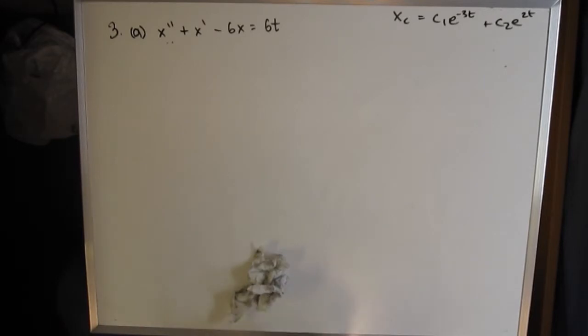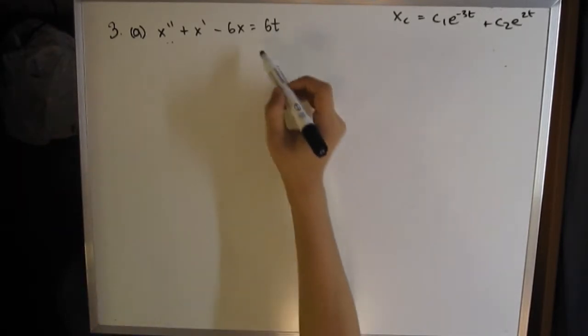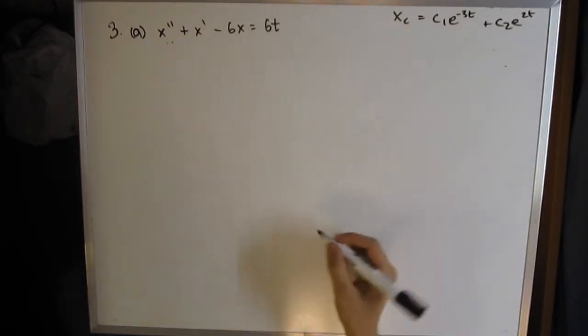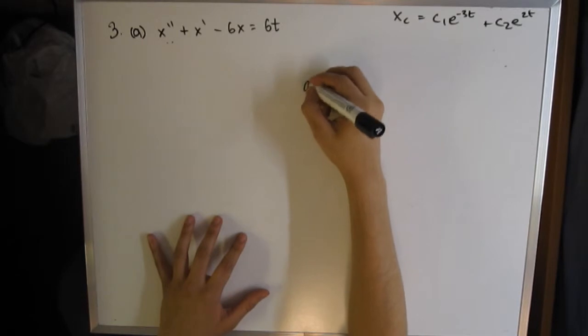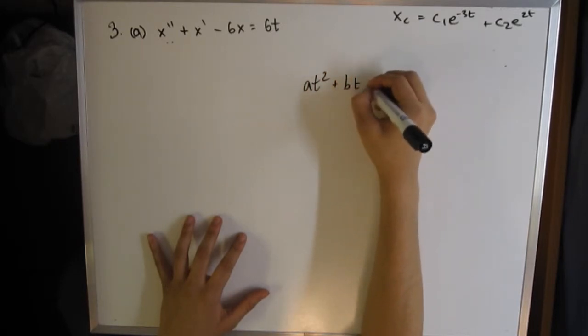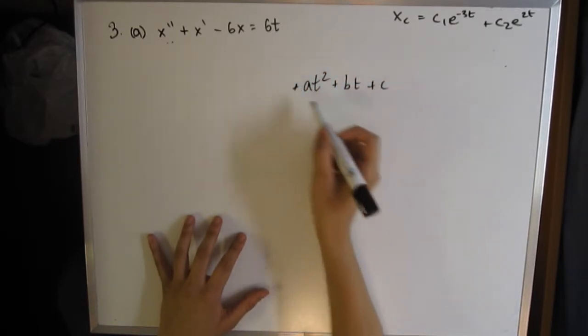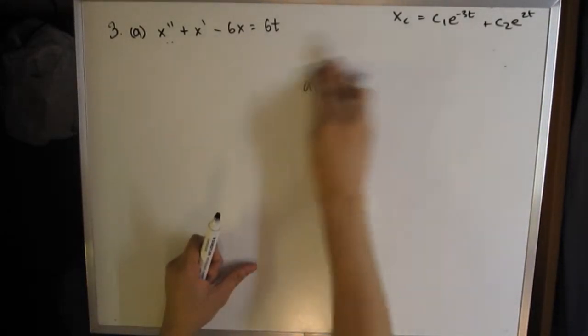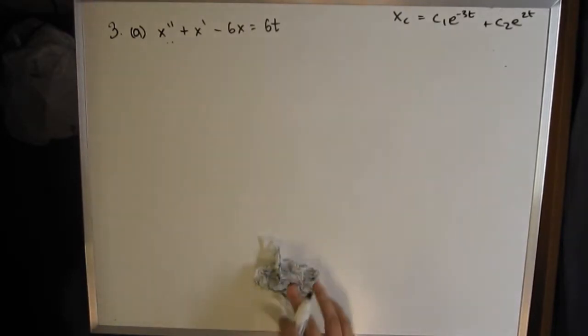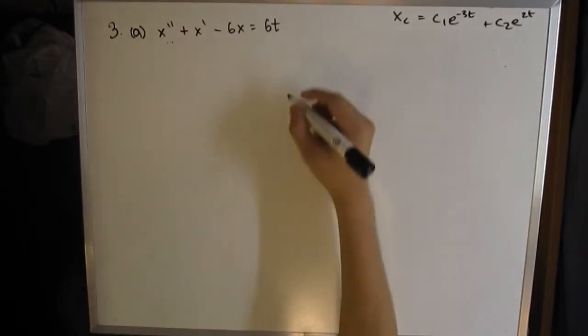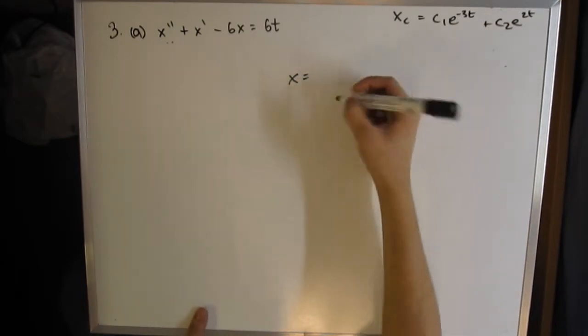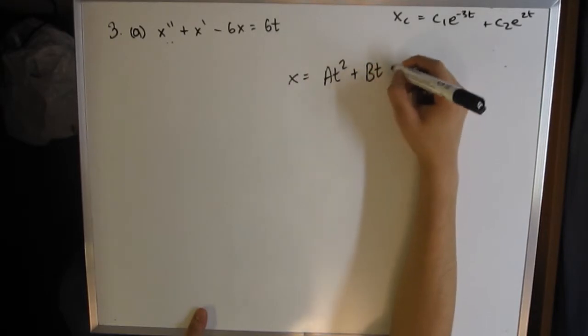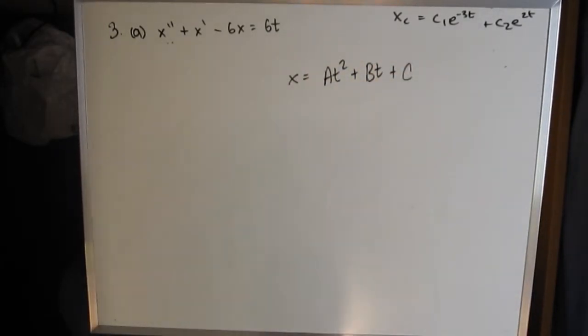Now is the slightly tricky part. The way you approach the equation is dependent on the right-hand side completely. Since this is 6t, or in the form at² + bt + c, basically nothing exponential, nothing to do with sine or cosine.